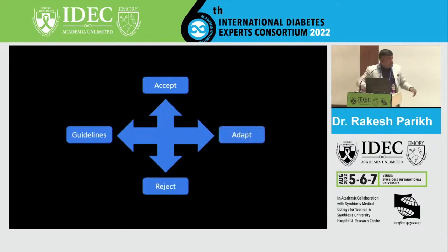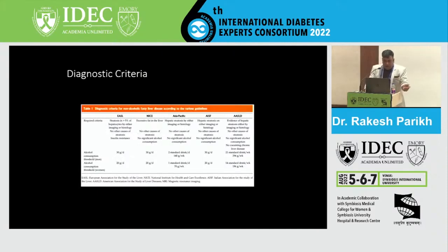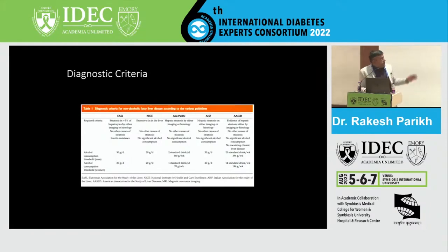These are the guidelines that Dr. Bharat has covered in his presentation. For diagnostic criteria, the easiest approach — which can be done even in primary clinics — is imaging. Most patients come with an ultrasound report, and ALT/AST can be easily measured. So imaging can be used for diagnosis. We should rule out other causes of fatty liver, and regarding alcohol consumption, 20 grams and 30 grams are the common limits assessed by most guidelines.